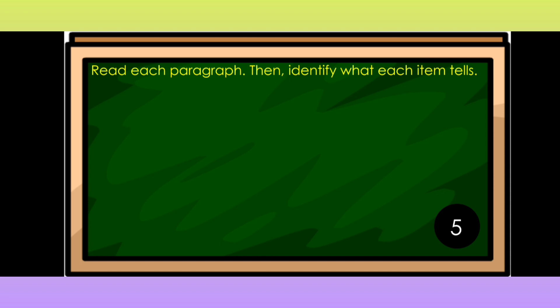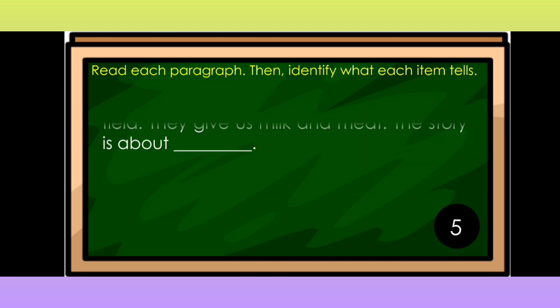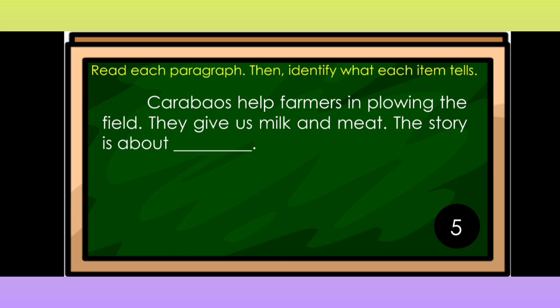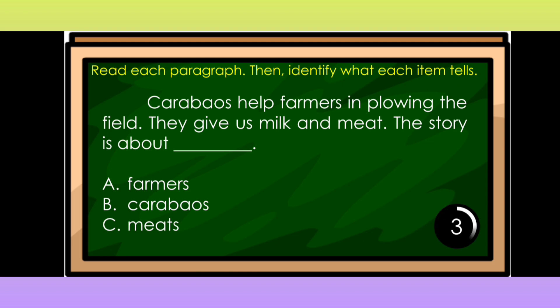We are going to read another paragraph, then identify what each item tells. Carabaos help farmers in plowing the field. They give us milk and meat. The story is about: A. Farmers, B. Carabaos, or C. Meat. If your answer is B, carabaos, then you are correct. This story is all about carabaos — the carabaos help farmers in plowing the field and they give us milk and meat.